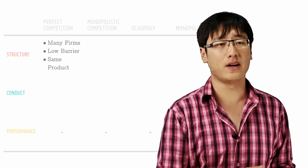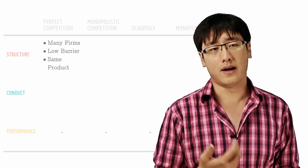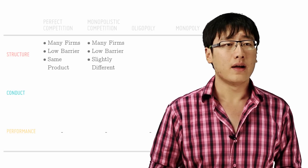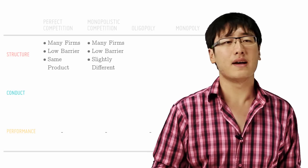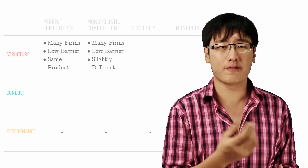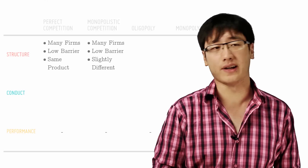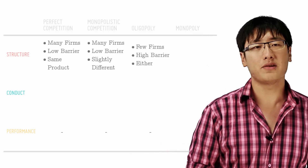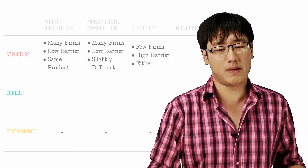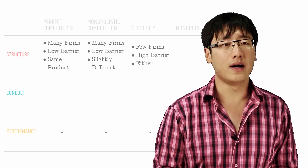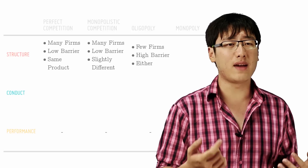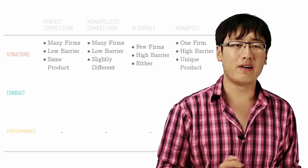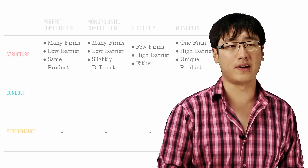Perfectly competitive firms have many firms, high freedom to entry, homogeneous product. Monopolistic competition has many firms, high freedom to entry and somewhat differentiated products. Oligopolists have few firms, high barriers to entry, very homogeneous or maybe differentiated products. The monopolist is the only firm, with very high barriers to entry and a unique product.